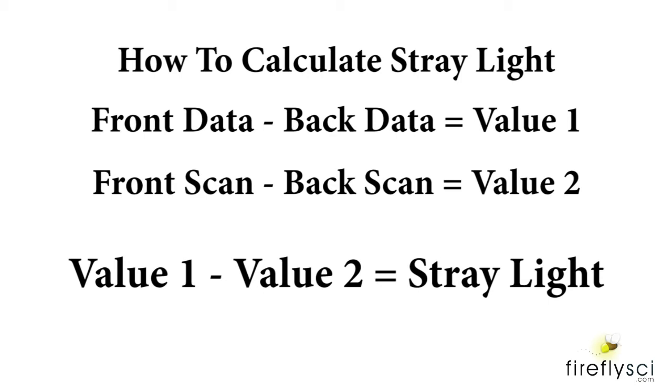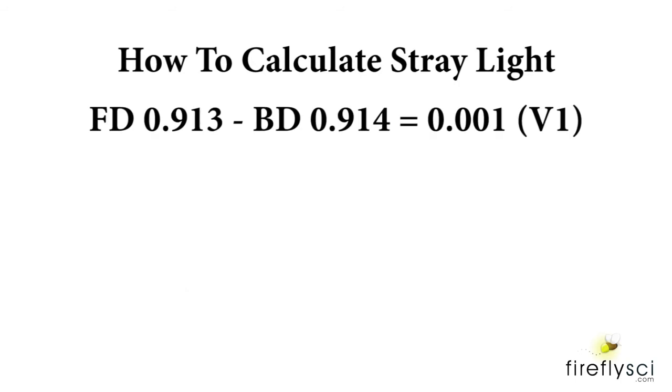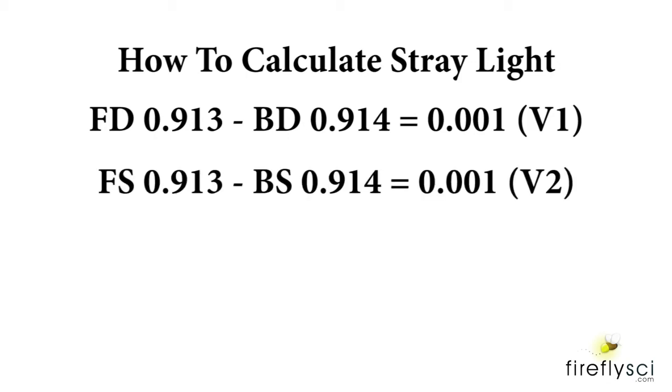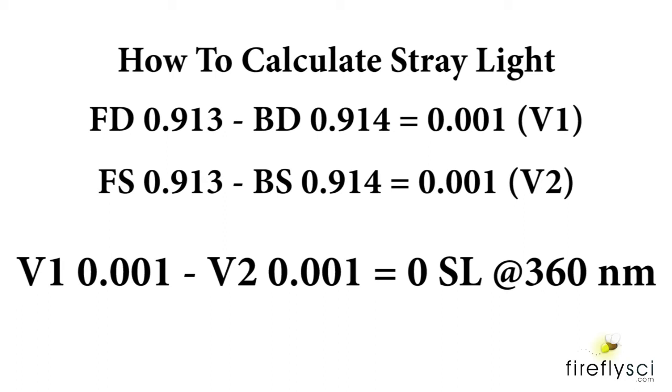So we'll take the values for the front and back scan directly from the certificate of calibration and we get 0.001 for value one. Now we'll take the front scan and back scan data and we get 0.001 for value two. 0.001 minus 0.001 is zero so our machine has no stray light at 360 nanometers.